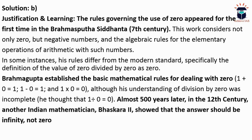Brahmagupta's rules are almost similar to modern mathematics. For example: 1 plus 0 is 1, 1 minus 0 is 1, and 1 multiplied by 0 is 0 — all matching modern standards. However, his understanding of 0 divided by 0 was wrong; he defined it as 0. It was only 500 years later that Bhaskara, in the 12th century, explained that 0 divided by 0 would be infinity, not 0.